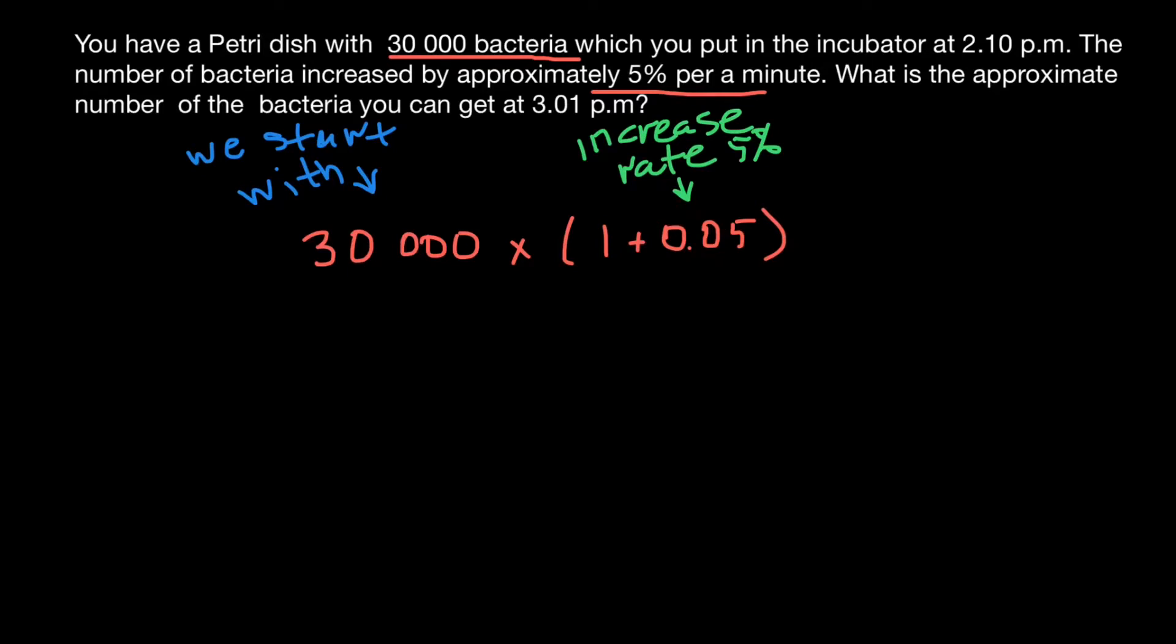And how many minutes do we have? We start at 2:10 PM and end at 3:01 PM. That means 51 minutes. So we have 51 cycles, and with each cycle it increases 5%. So power 51.